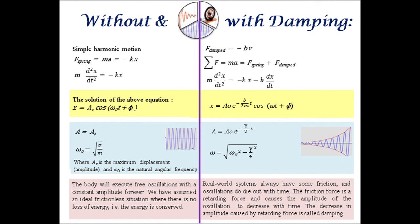The solution of the differential equation is x equals A₀ cosine(ω₀t + φ), where A₀ is the amplitude and ω₀ is the natural angular frequency.